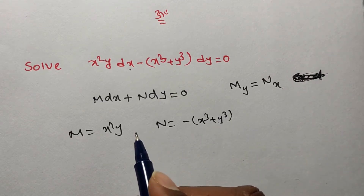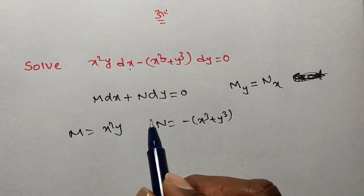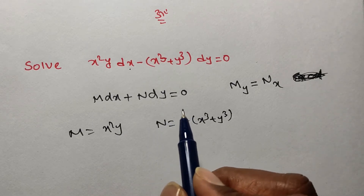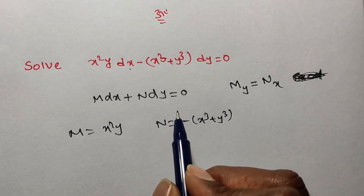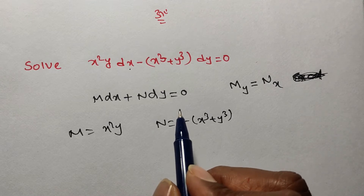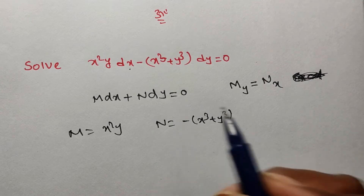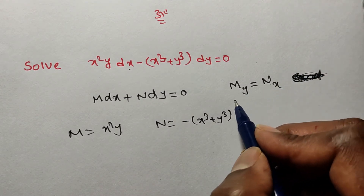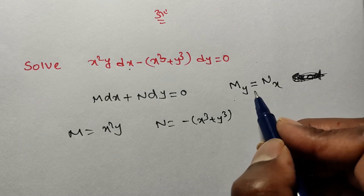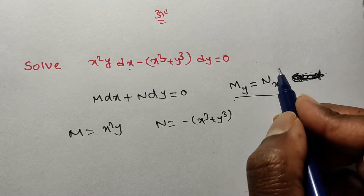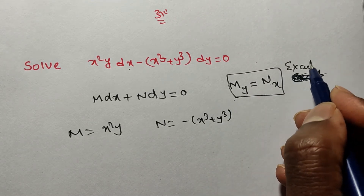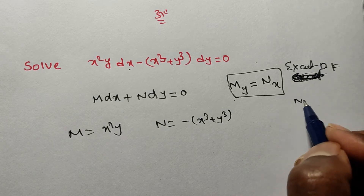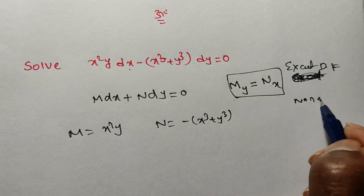Whenever the equation is given in M dx + N dy = 0 form, first we have to identify whether the problem is exact or not. To check, we find ∂M/∂y and ∂N/∂x. If both are equal, it is an exact differential equation; if not equal, it is non-exact.